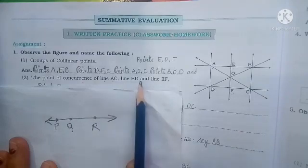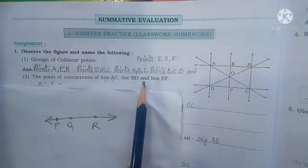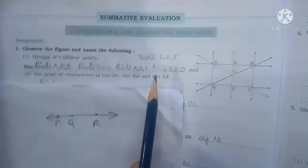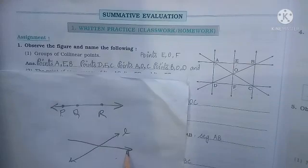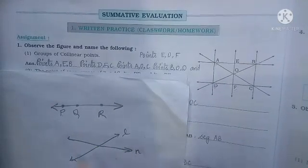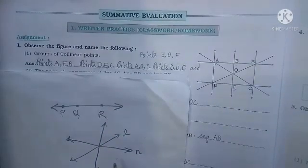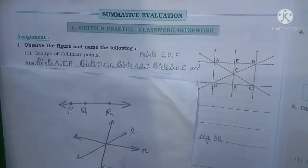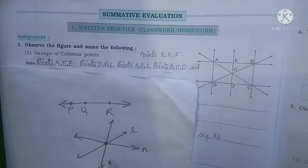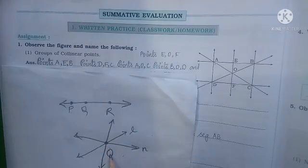Now moving ahead with the second question: they are asking for the point of concurrence of line AC, line BD, and line EF. Before answering, you should understand what concurrent lines are. Suppose I have line L, and another line intersecting it named line N, and a third line M also intersecting both. These three lines — line L, line M, and line N — are intersecting each other at one point, and if I name that point as O, then O is the point of concurrence.